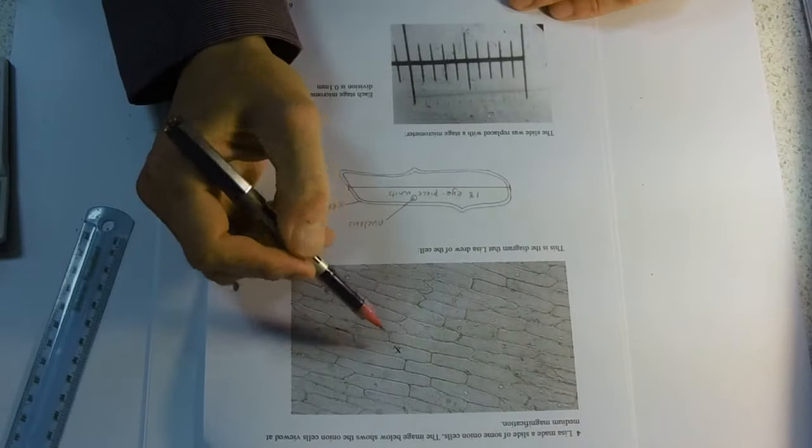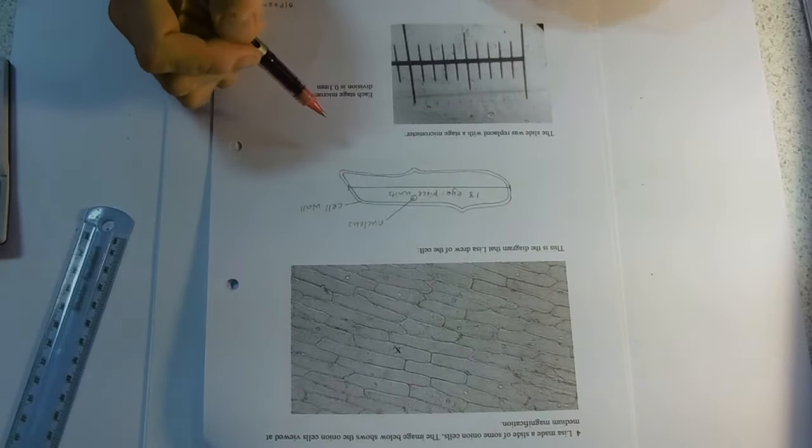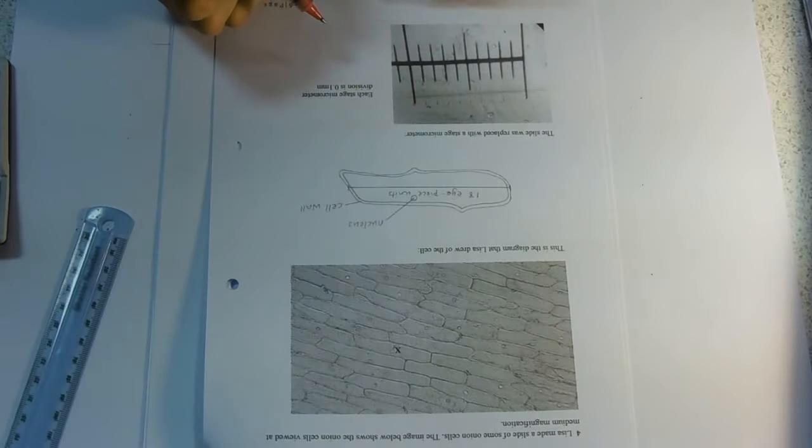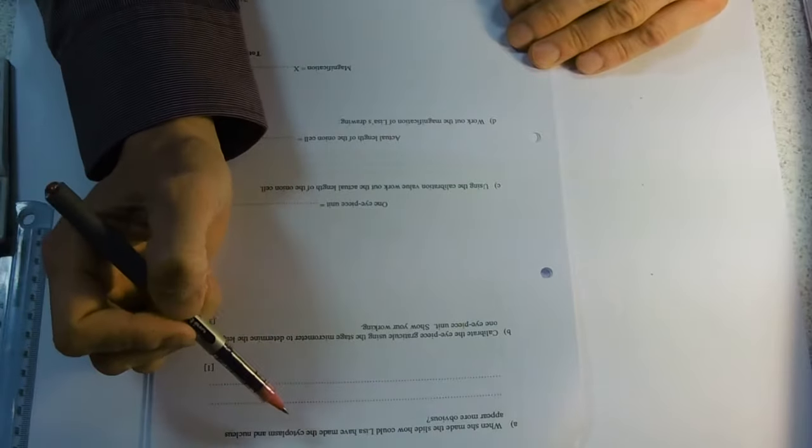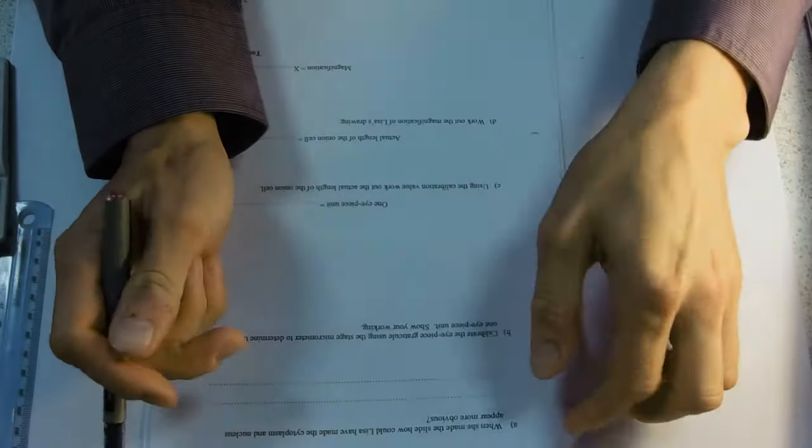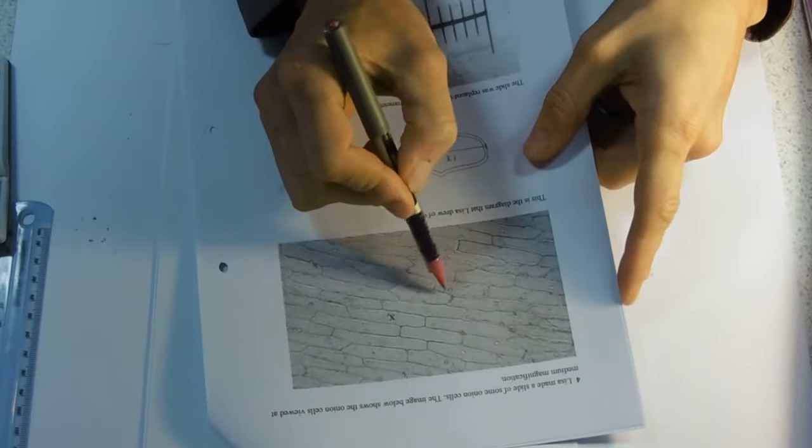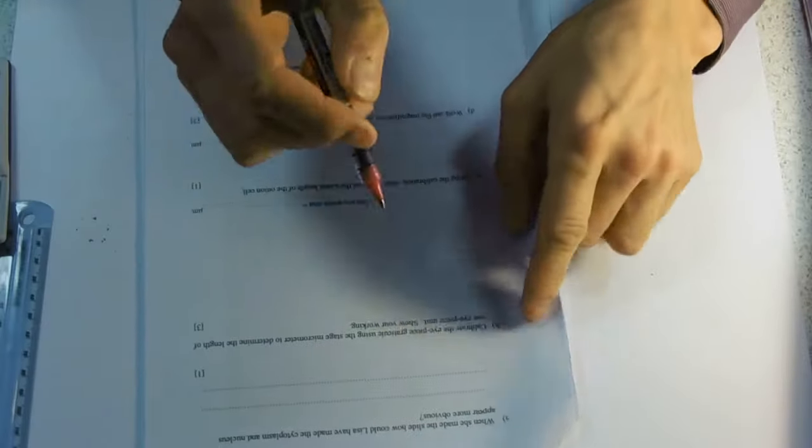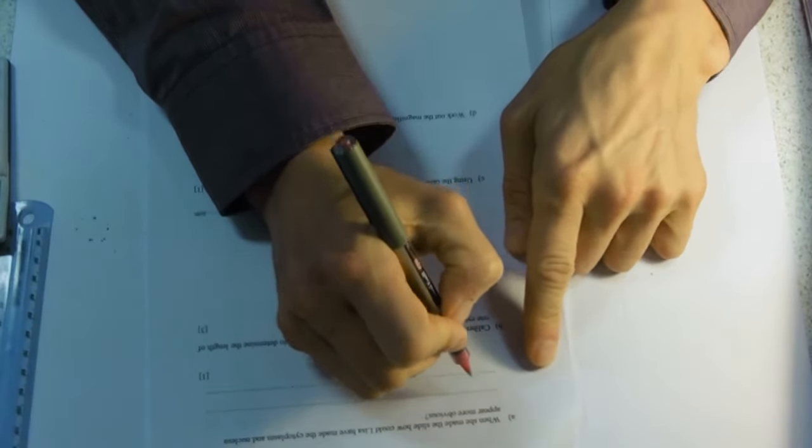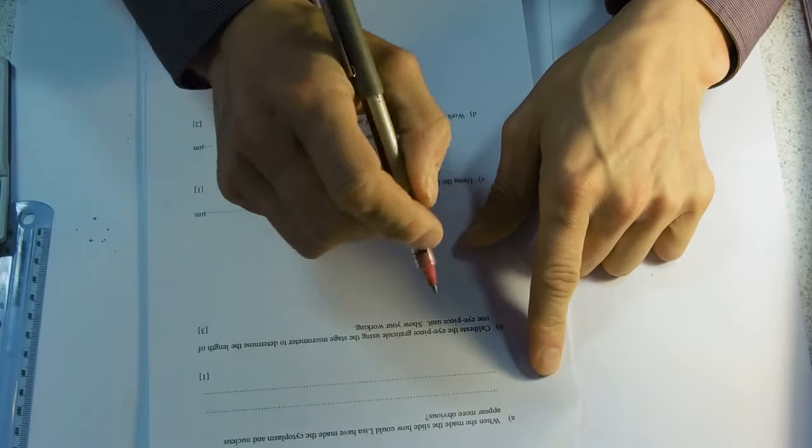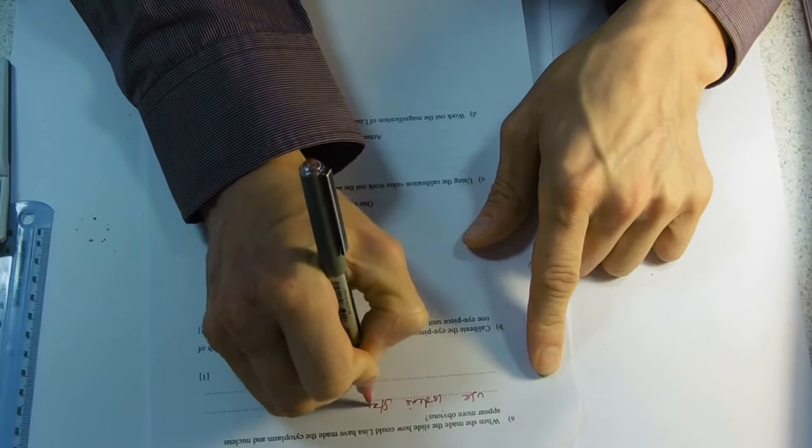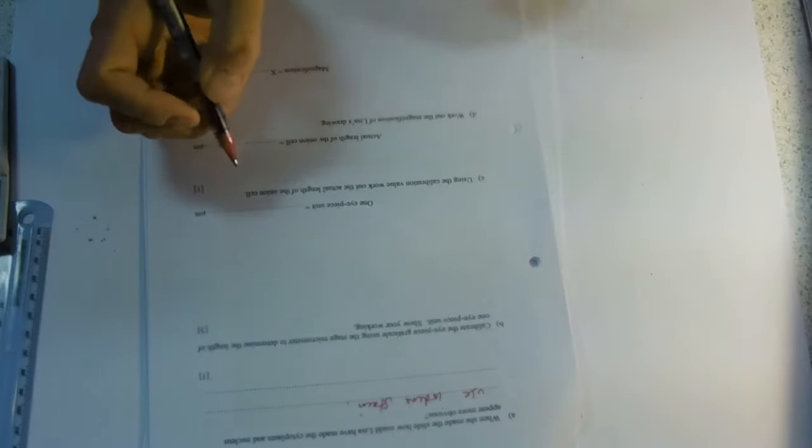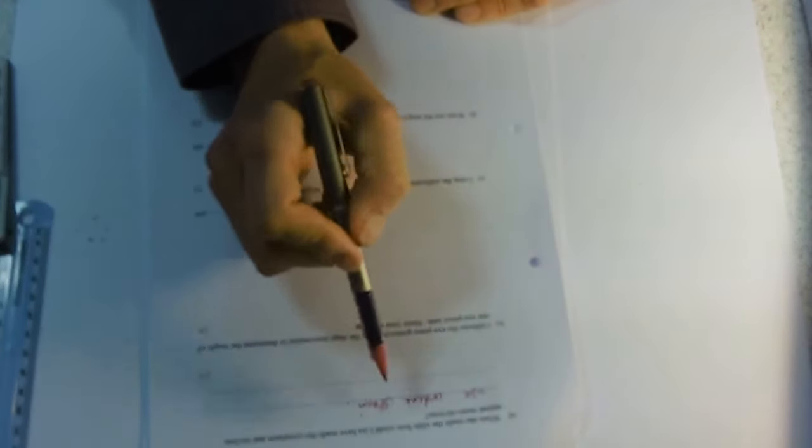We have a cell and we have a diagram of a cell. Very nice diagram. And we have our stage micrometer. What are we asked to do? How could Lisa have made the cytoplasm and nucleus appear more obvious? The answer's not magnified anymore. Because even if you make it bigger, it's not going to be any clearer. It's just going to be bigger. So you used a stain and it was iodine for your onion cell. So use iodine stain. We were quite generous. If you mentioned just iodine or just the stain, we gave you that mark.